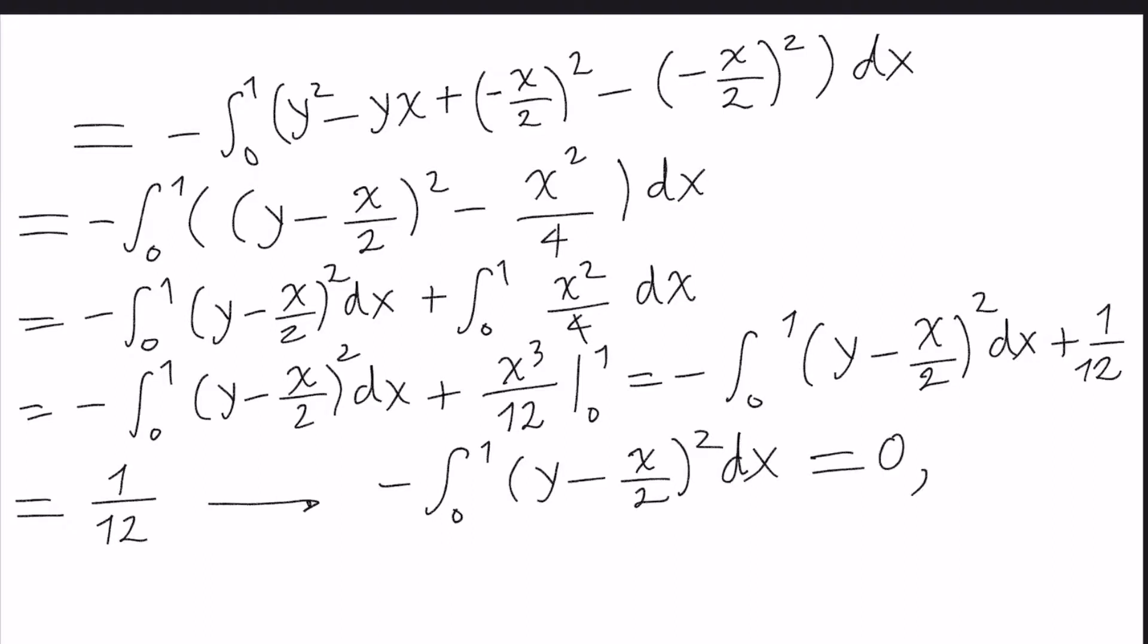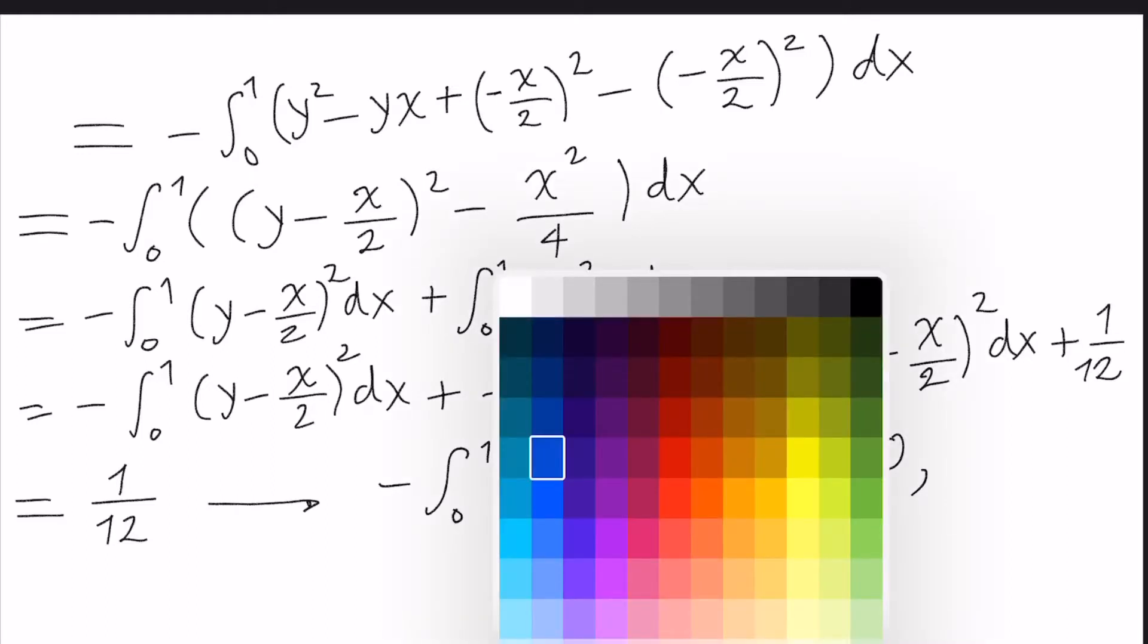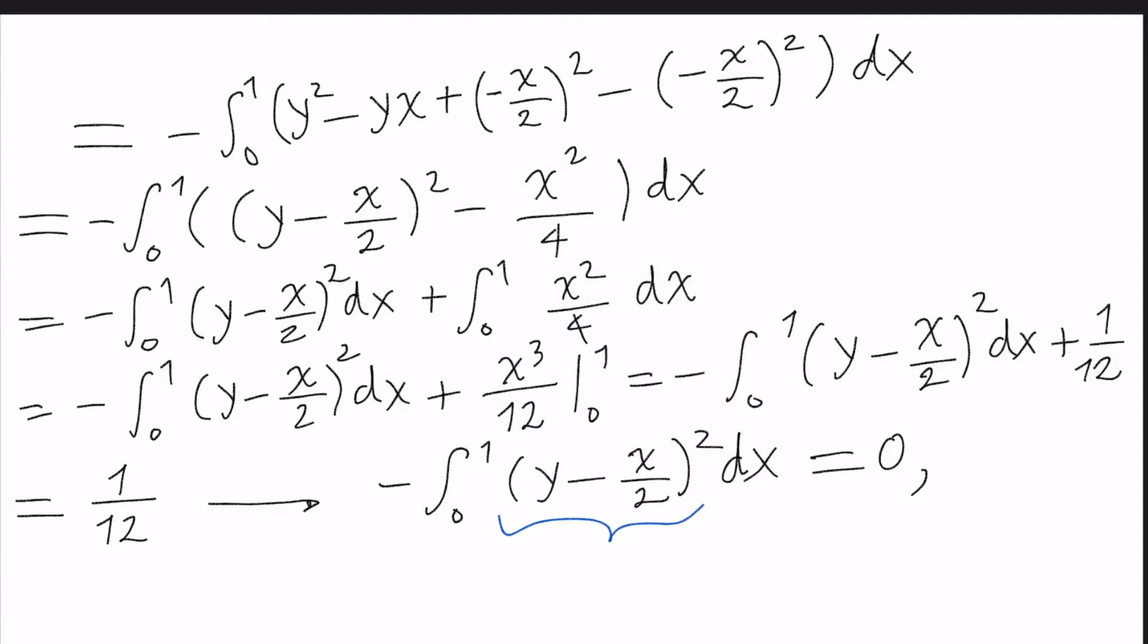So how can we use the hypothesis that this function is a continuous function? The idea here is that the integral must be 0. Why must it be 0? Because we are integrating a positive quantity. Remember that this term is a positive quantity and also it's continuous, so it must be equal to 0 in order to give an integral equal to 0 by continuity. So it implies that y minus x divided by 2 is equal to 0, so y must be x divided by 2.